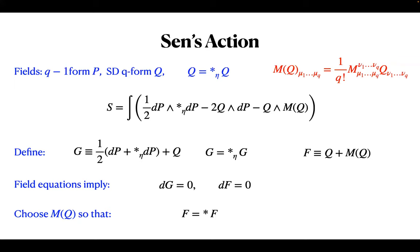The trick is to define F as Q plus M(Q). M is chosen so that the field equations from this action imply that F is self-dual with respect to the real spacetime metric g. This means M must have explicit dependence on the spacetime metric g—that's the only place where g occurs. It's rather remarkable that M can be chosen in such a way. Both F and G are composites of the fundamental fields Q and P. When you look at the field equations—which are quite complicated—these definitions effectively diagonalize or disentangle those equations so you can see the field content.